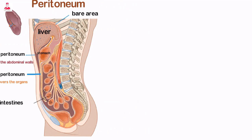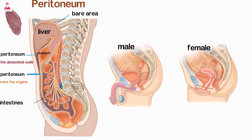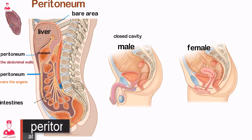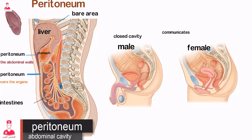In males, the peritoneal cavity is a closed cavity. But in females, it communicates with the exterior through the uterine tubes, uterus, and vagina.